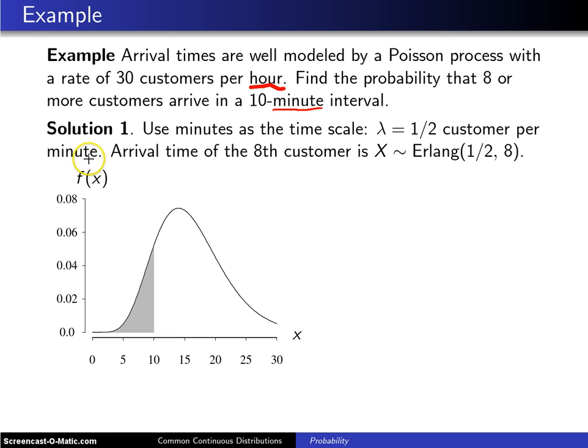The arrival time of the eighth customer has the Erlang distribution, and that Erlang distribution will have lambda equals one-half and a parameter k of eight. That will be the Erlang distribution with parameters lambda equals one-half and eight.